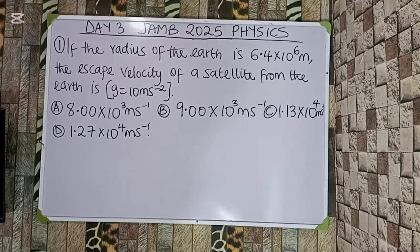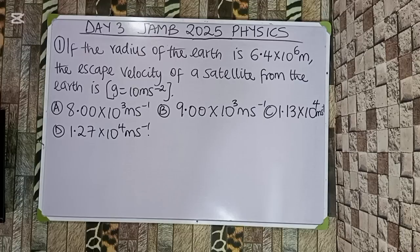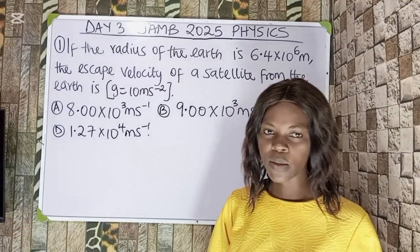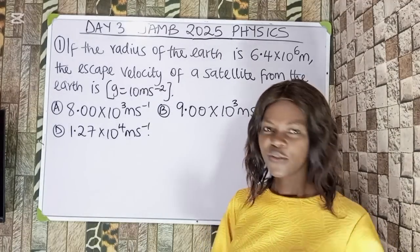Question 1. If the radius of the Earth is 6.4×10⁶ meters, the escape velocity of a satellite from the Earth is what? I am giving g to be 10 meters per second squared. The options are: A) 8.00×10³ m/s, B) 9.00×10³ m/s, C) 1.13×10⁴ m/s, D) 1.25×10⁴ m/s. Before we solve this, you should ask yourself: what is escape velocity and which formula are we going to use?